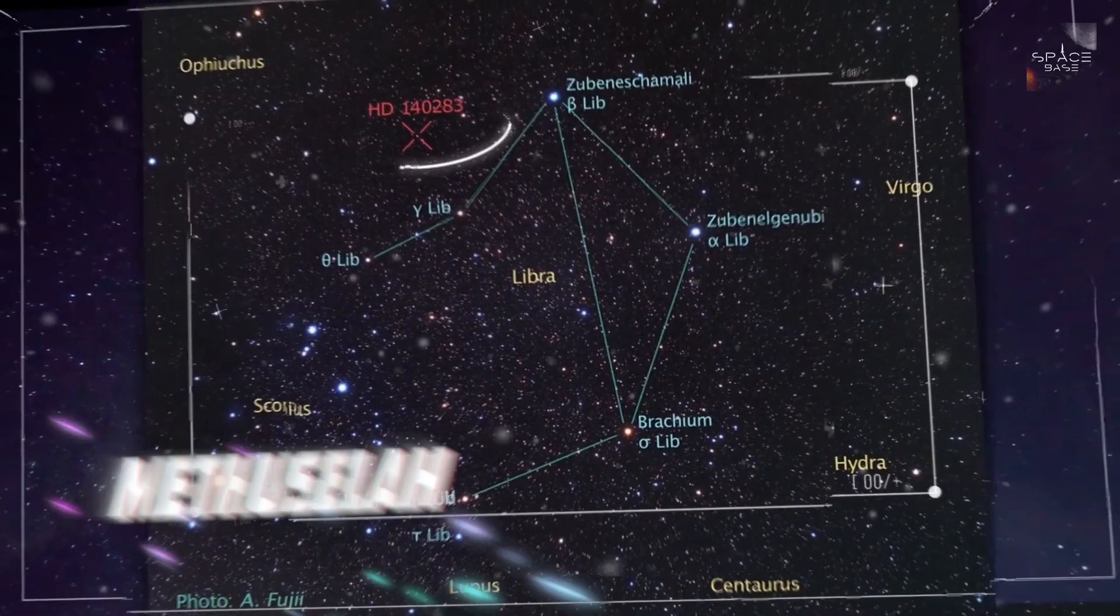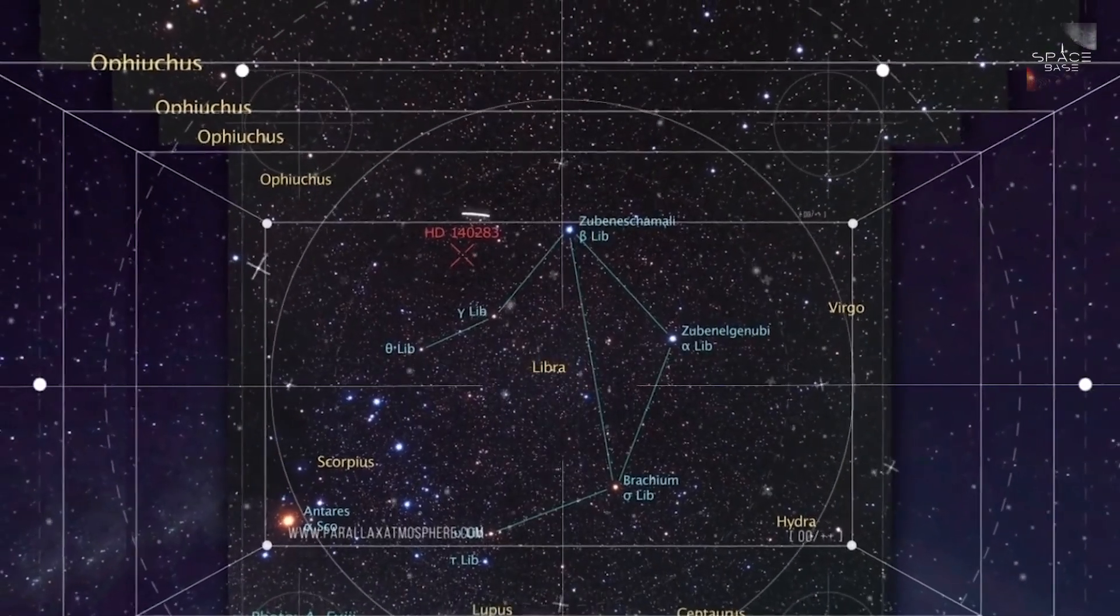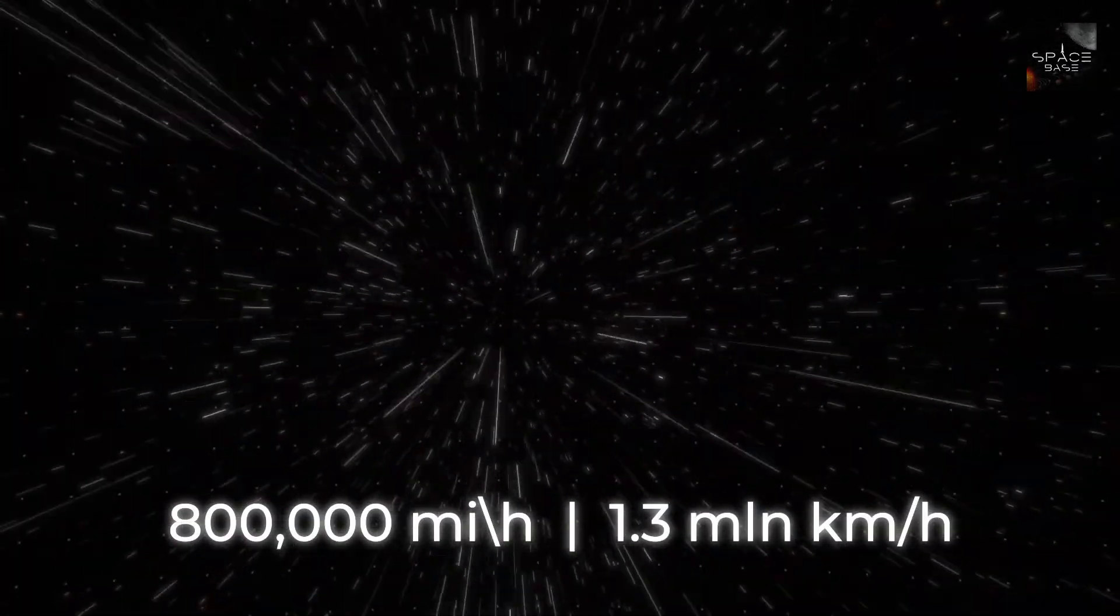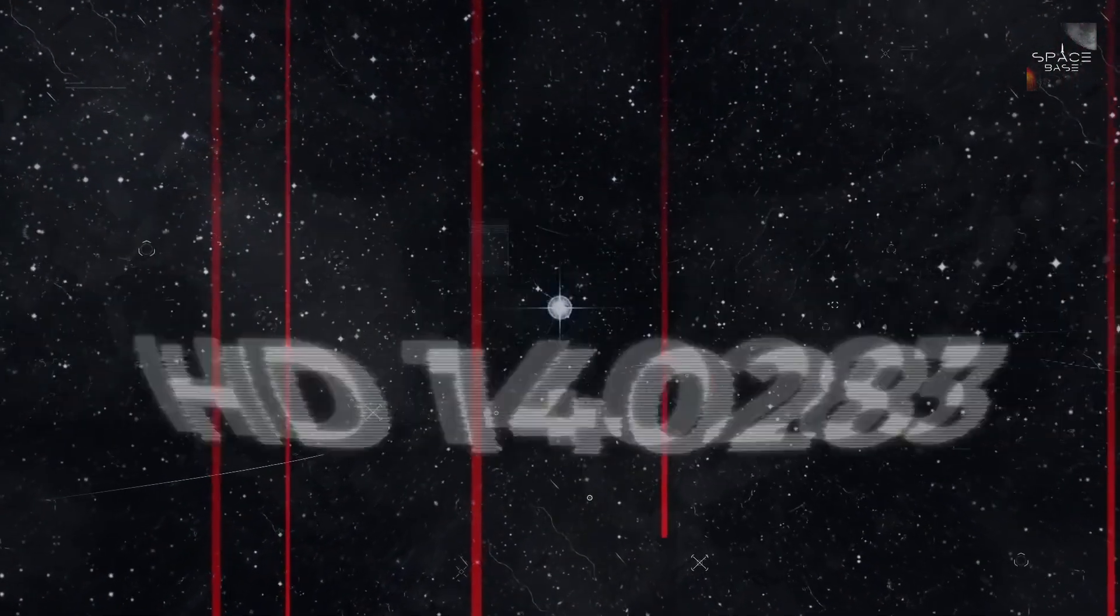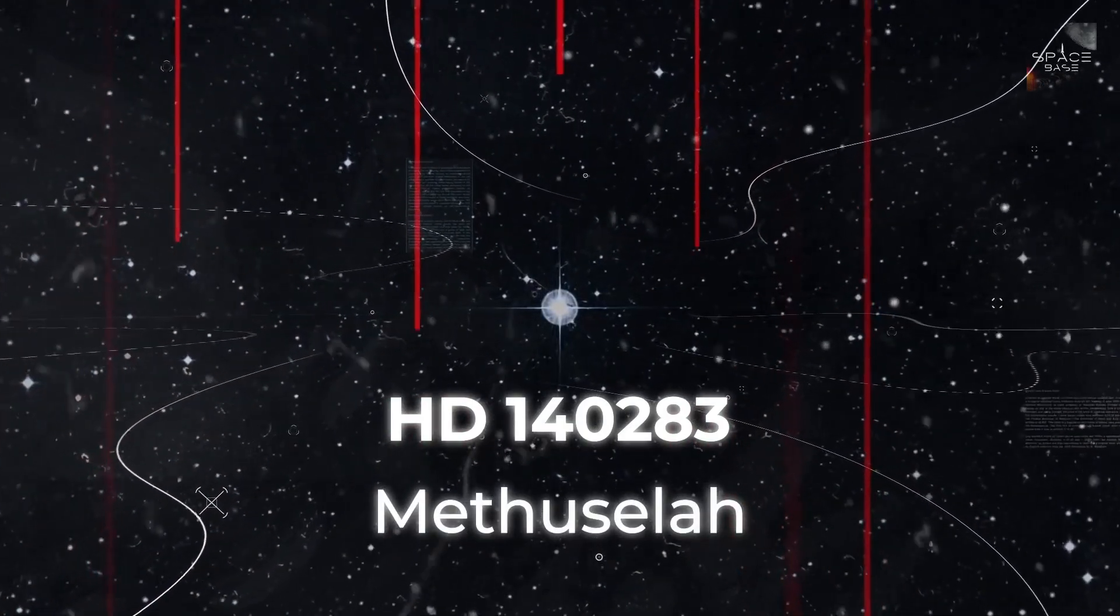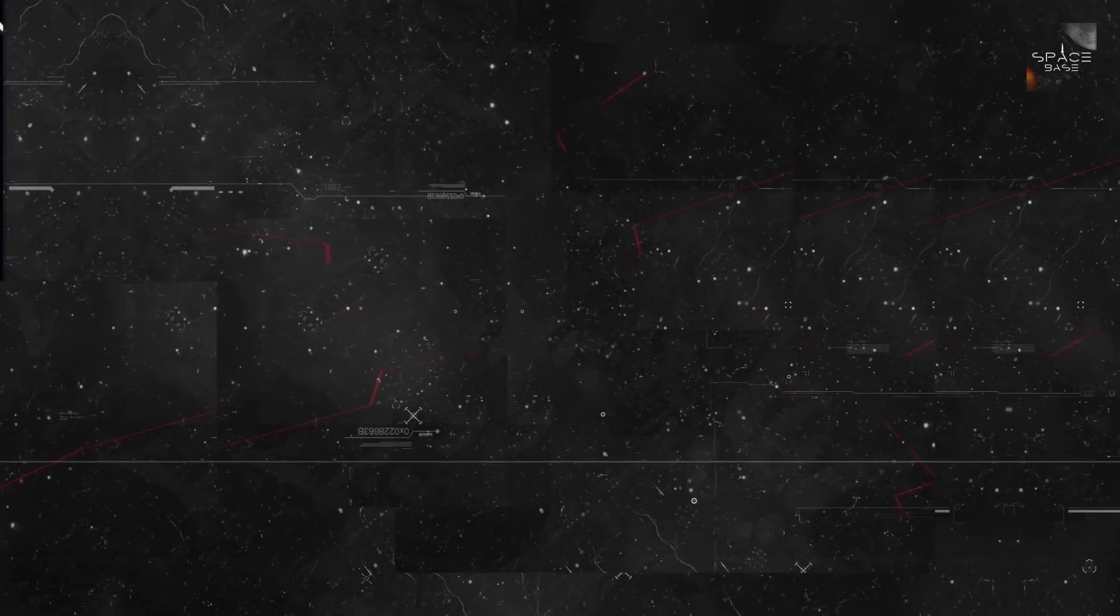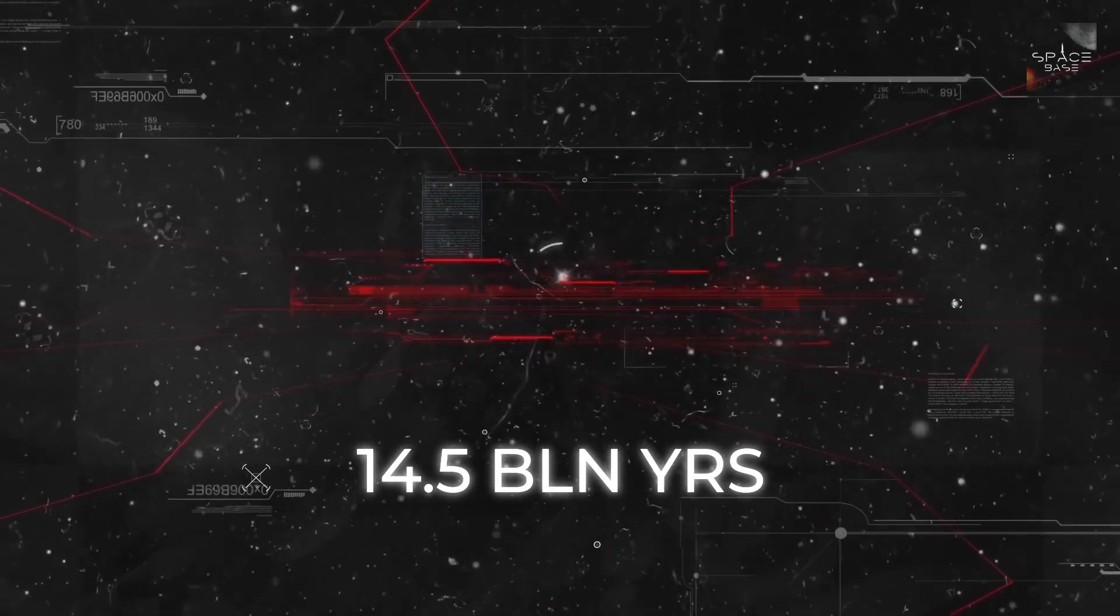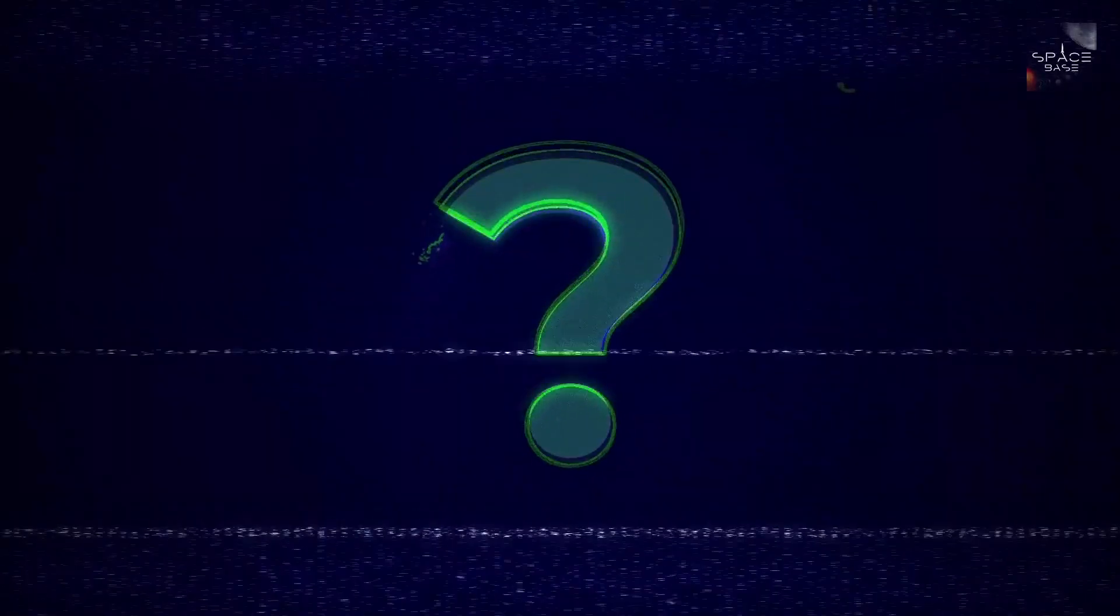Moving on from the farthest to the oldest, this is where Methuselah comes into play. This staggering star resides in the constellation Libra, while it rapidly travels through the sky at 1.3 million kilometers an hour, meaning that while you heard this sentence, it already traveled 5,000 kilometers. Also identified by the codename HD140283, Methuselah is the oldest star in the universe so far. In fact, it is said that this mysterious object is older than the universe itself. But how is that even possible?